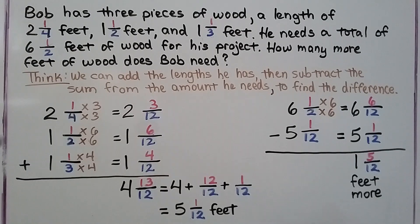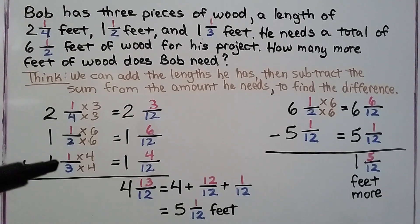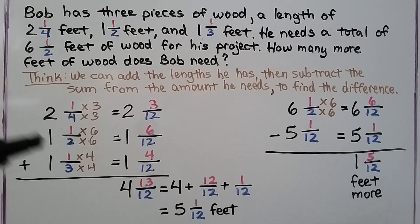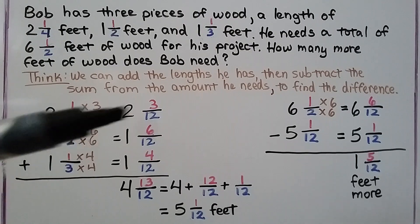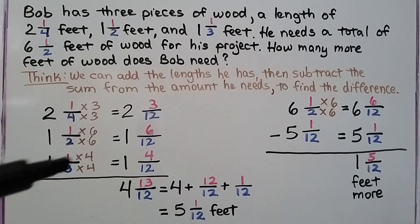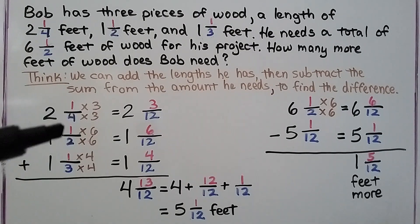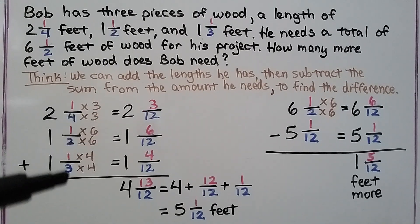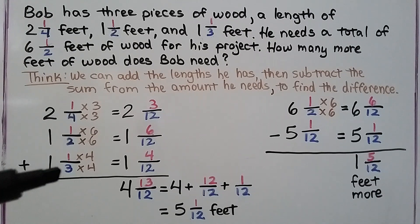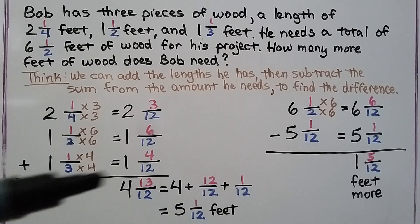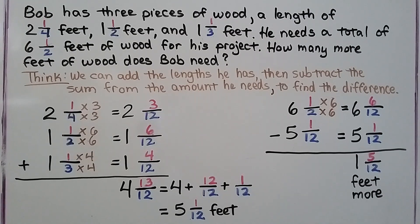So even if we have three addends or four addends or more, we can give them like denominators by finding where all three denominators can meet. A 4, a 2, and a 3 as denominators can meet at 12.